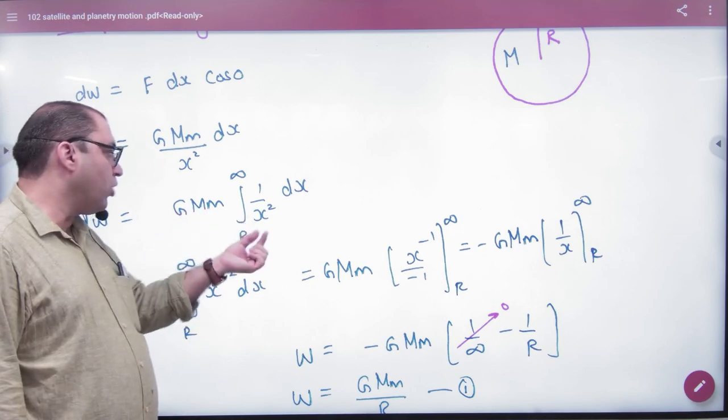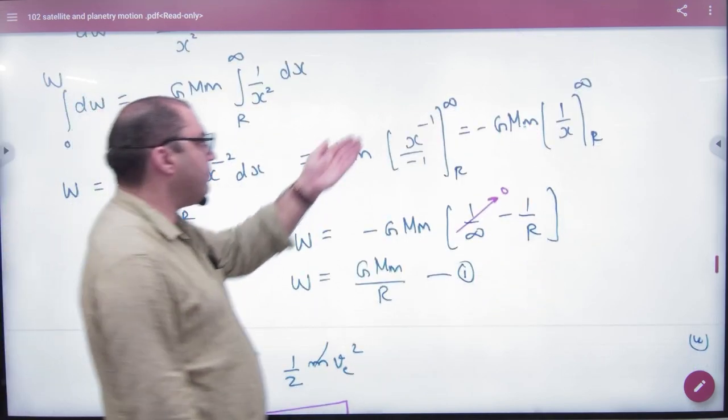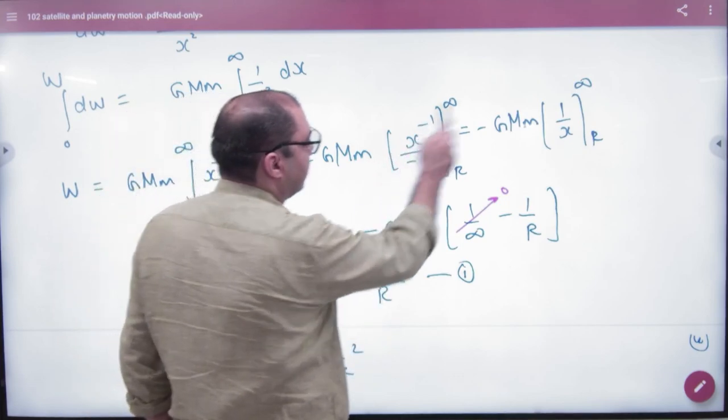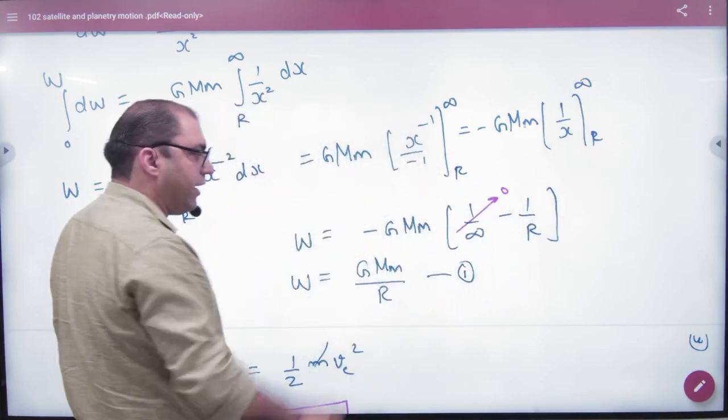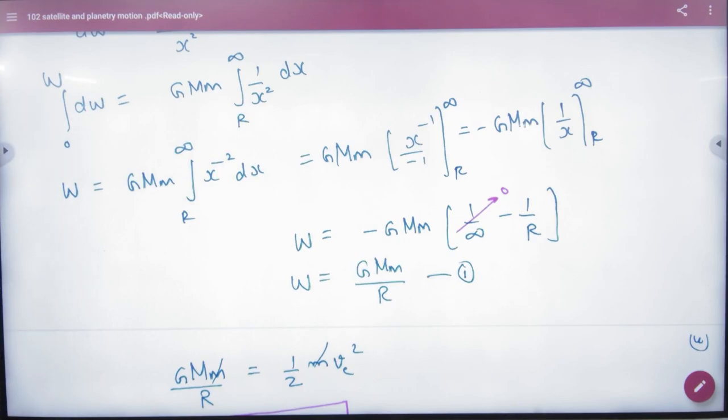So, this is a common. We take it up. X power minus 2. We integrate it. X power minus 1 by minus 1. Minus 1 is out. X power minus 1. What is 1 by x? One from r to infinity. When x is infinity, 1 by infinity is 0. So, this is a value of the work done, which is even opposite at potential energy.